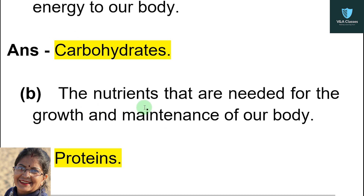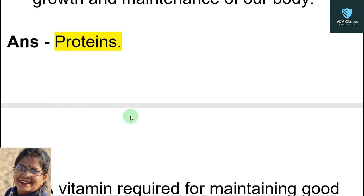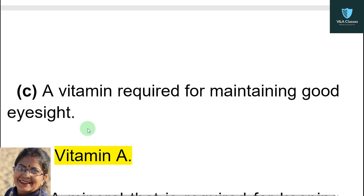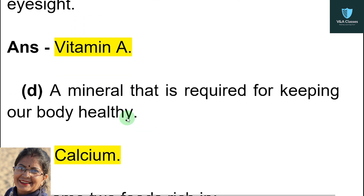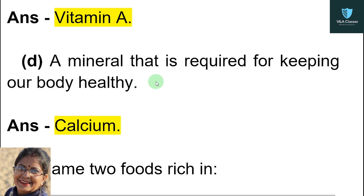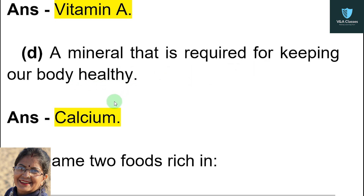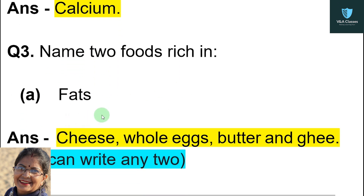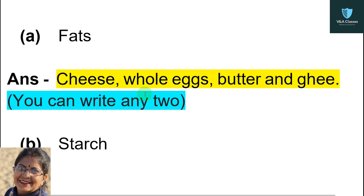Next part of question two — the nutrients that are needed for the growth and maintenance of our body. Answer: proteins. Next — a vitamin required for maintaining good eyesight. Answer: vitamin A. Next — a mineral that is required for keeping our bones healthy. Answer: calcium.